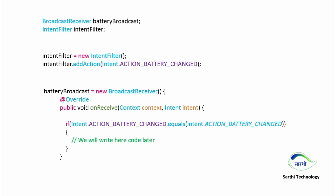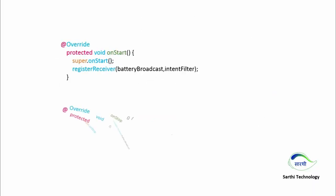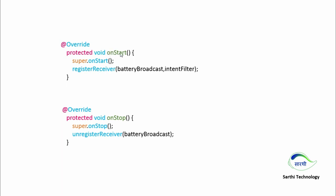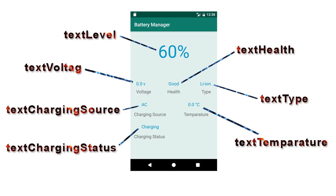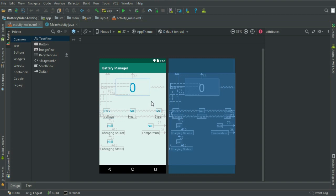After creating this broadcast receiver, we need to register and unregister it. We will register the broadcast receiver in the on start method using register receiver and battery broadcast. Now let's move to the practical. This is the view of our application and these are the IDs.